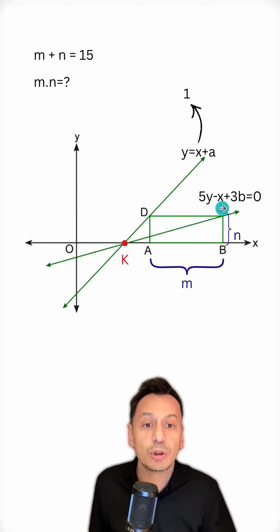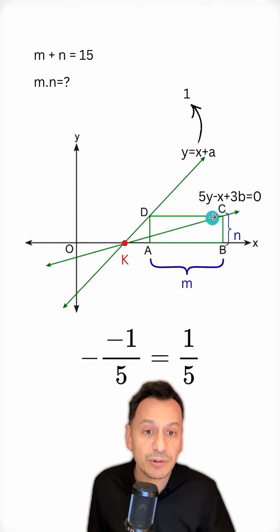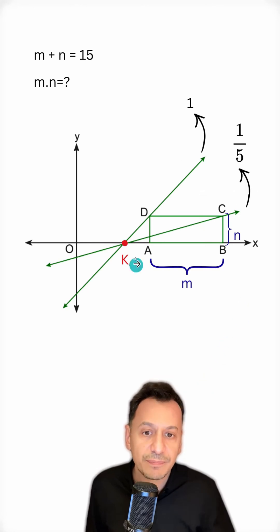We will divide the coefficient of x by the coefficient of y. So the coefficient of x is minus 1. The coefficient of y is 5. Minus 1 divided by 5. And we will also change its sign. Since two negatives come together, it will be 1 over 5.